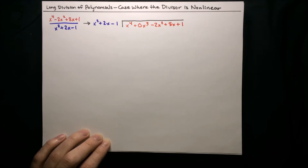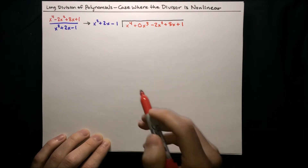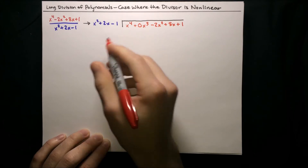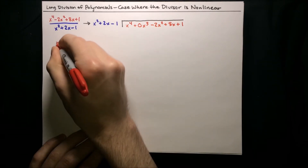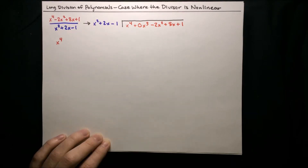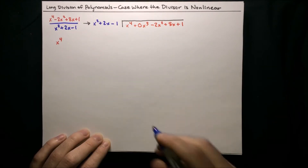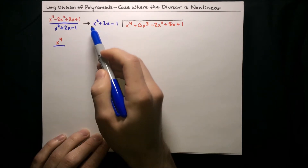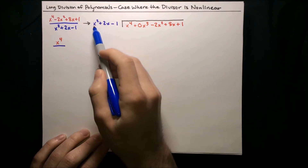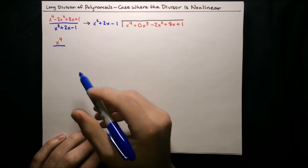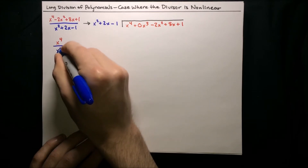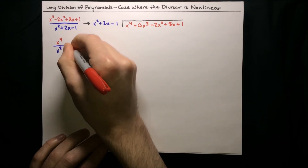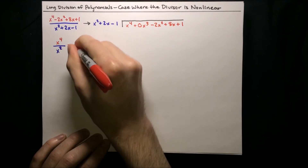Our first step is always to take the highest degree term of the dividend — here it's x to the fourth — and divide it by the highest degree term of the divisor. This time, our highest degree term of the divisor is x squared, the biggest nonlinear term. So x to the fourth divided by x squared is just x squared.